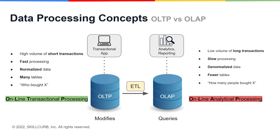Now let's look at OLTP and OLAP systems. These are both online database systems, with the main difference being that one is transactional and the other is analytical. OLTP systems process a higher number of short transactions, whereas OLAP systems process a smaller number of long transactions. OLTP queries run faster, whereas OLAP queries are slower due to their complexity. OLTP systems have normalized data, whereas OLAP ones have denormalized data. In general, OLTP systems are used when the database needs to be modified, and OLAP systems are used when the database needs to be queried.